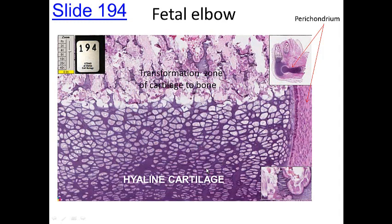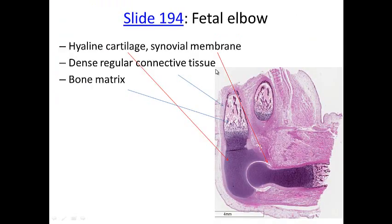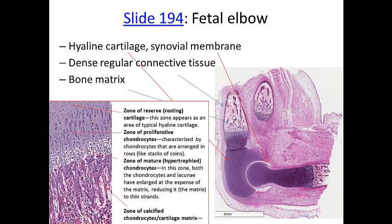The lacunae is the equal space where the cell has laid down extracellular matrix around it. Looking at a fetal elbow joint, we can see the capsule around the cartilage, the perichondrium, and a host of blue cells — the hyaline cartilage. Right at the growth plate, cartilage is being transformed to bone. You can see the hyaline cartilage at the articular surfaces, the synovial membrane, and dense irregular connective tissue in the periosteum or perichondrium.